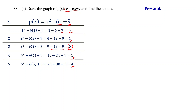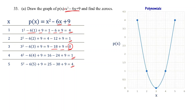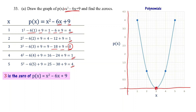We plot these points on the graph with the vertical axis and the horizontal axis. On the horizontal axis, x = 3 touches the horizontal axis, meaning x = 3 is the zero of the given polynomial.